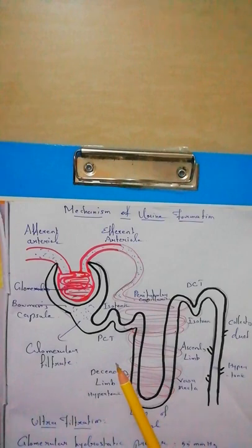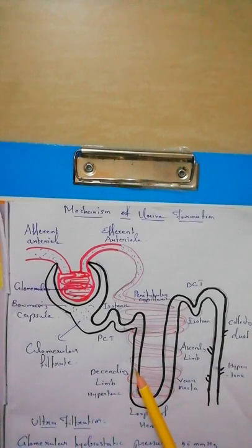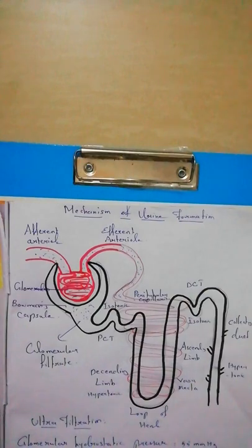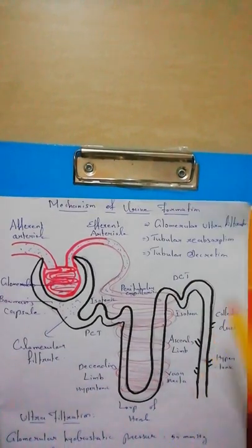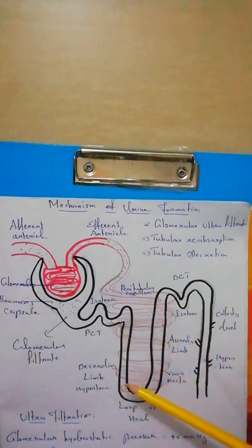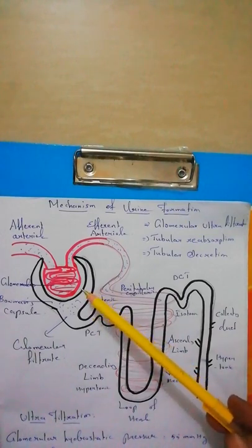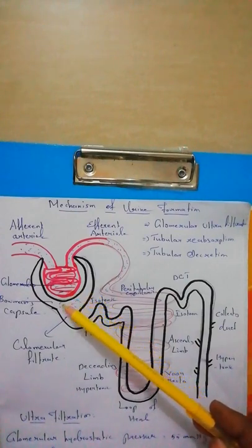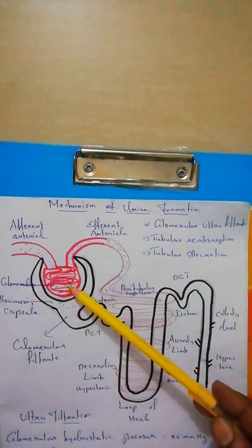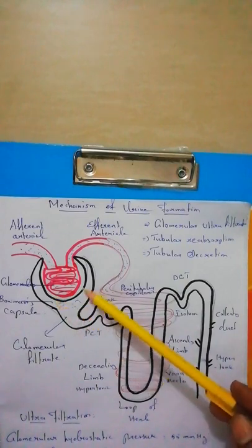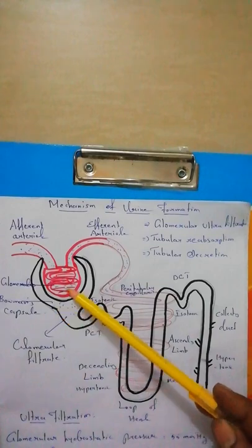This overall process of urine formation is a little complicated and is divided into three phases. Before going into the phases, let us review the structure of the nephron. The first major part of the nephron is the Malpighian body, which includes the glomerulus — a capillary bed — covered by Bowman's capsule. Together, the glomerulus and Bowman's capsule form the Malpighian body.